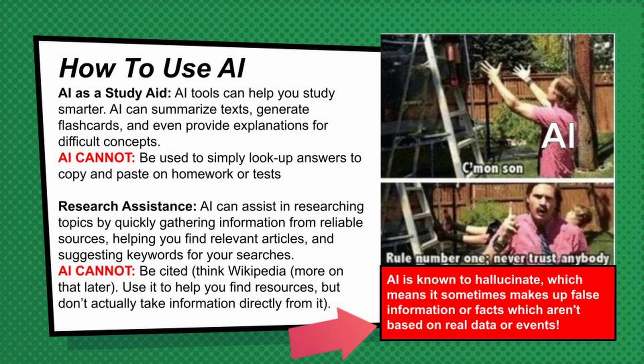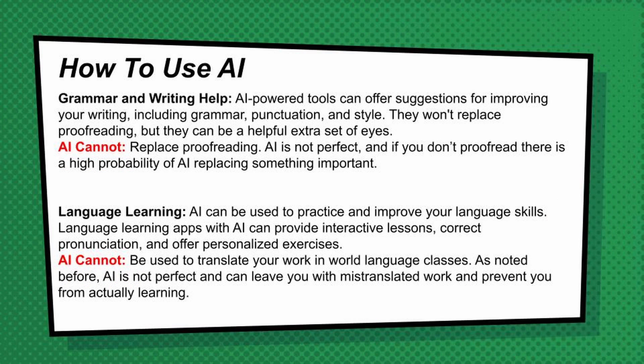AI can be great for research assistance — a very powerful tool for finding reliable resources, relevant articles, and suggesting keywords for searches. But AI itself is not a credible or reliable source, because AI is known to hallucinate, meaning it makes something false up — not based on facts, real data, or events; it just creates it to provide an answer. AI is also great for suggesting improvements to your writing, but it isn't a substitute for proofreading — it can help with grammar and punctuation, but it doesn't replace human eyes. AI is not perfect, so students need to rely on their own skills. They can use these as tools, but not to replace what they already know.